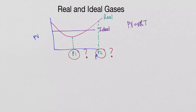So my question to you: why do we see those two deviations in the real gas line at P1 and at P2? If you're part of our online school, you can go to our Google Classroom where there will be a link to answer this question and I'll give you feedback from there.